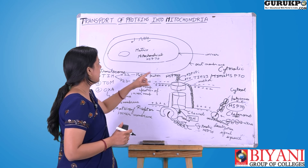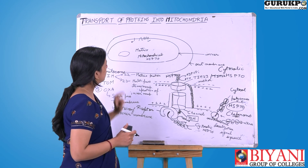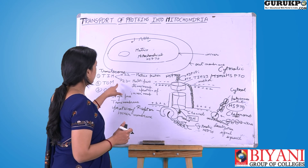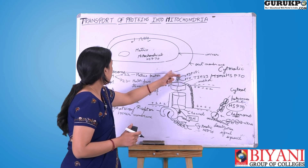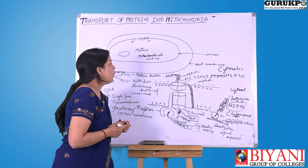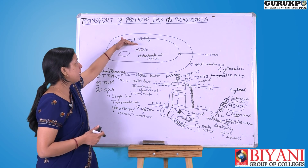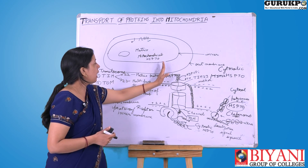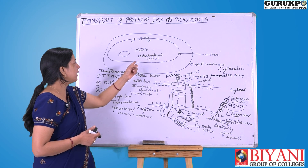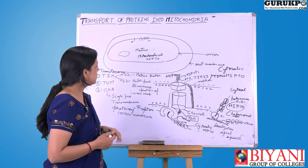Transport in the inner mitochondrial membrane may occur in two ways. One way is that the protein is transported first to the matrix and then to the inner mitochondrial membrane. Alternatively, the protein is transported from one transporter to the next — from TOM to TIM22, then TIM23 and OXA. Proteins meant for the matrix contain only one signal sequence, while proteins meant for the inner mitochondrial membrane contain two signal sequences: one recognized at the outer membrane and one recognized at the inner mitochondrial membrane.